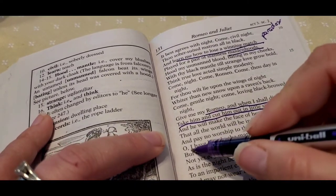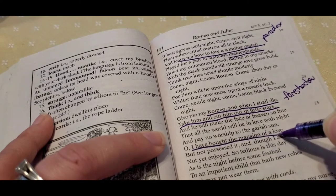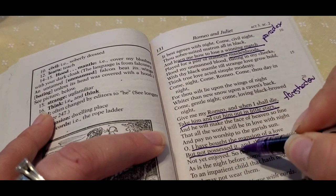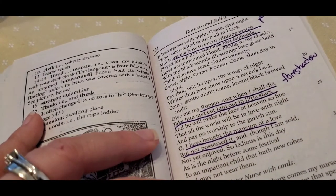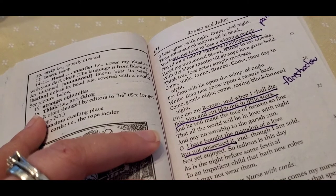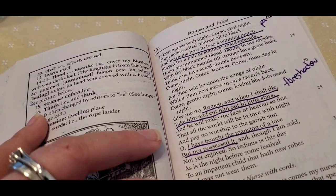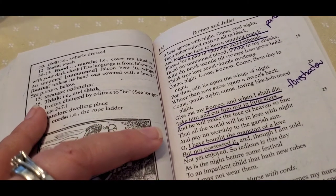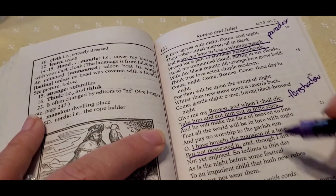And she says, oh, I have bought the mansion of love, but not possessed it, meaning she has been married, she's married now, but she hasn't gotten to own the rights of what comes with marriage. So think about you buy a house, but you can't move in yet. That's what she's saying here.